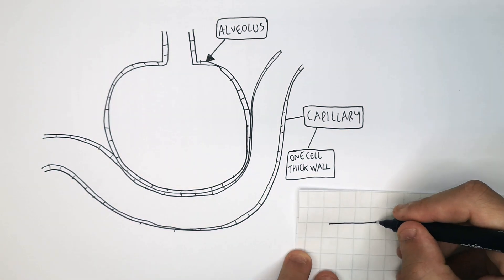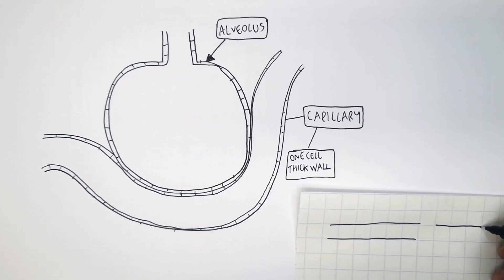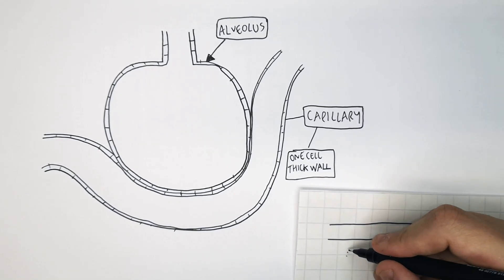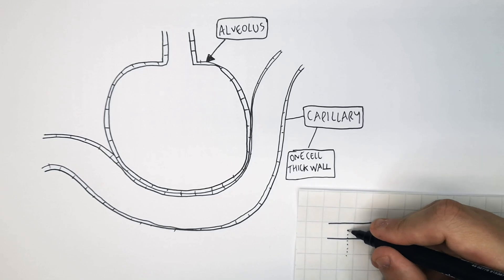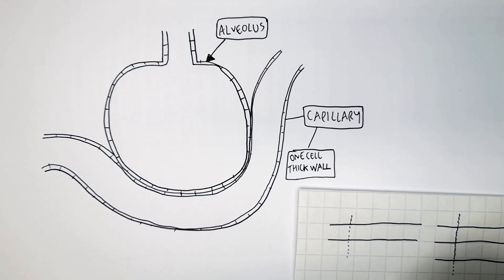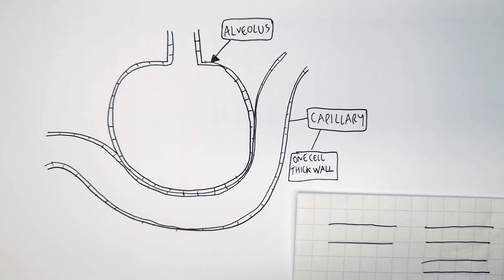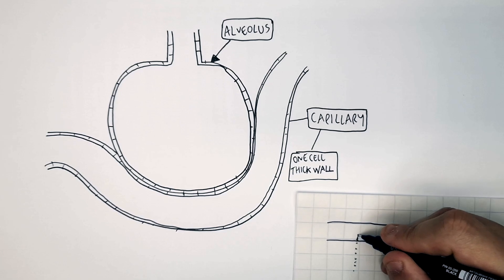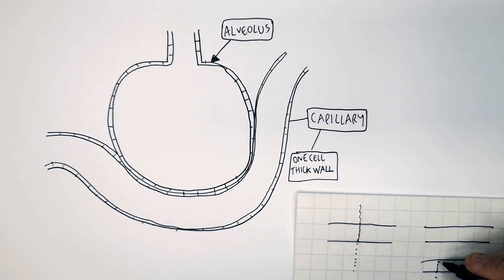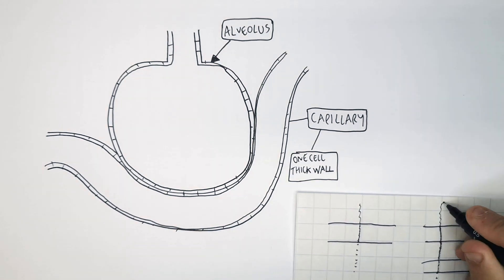So I'm now drawing a one-cell-thick wall, and this is a two-cell-thick wall. Diffusion will take longer going across two cells. So that means that if you had a third one, diffusion will take even longer the more cells you add to the wall. So you want the diffusion of gases to happen very quickly.